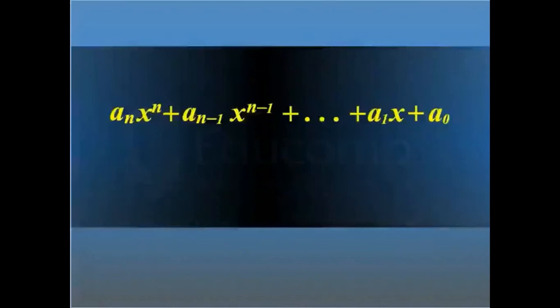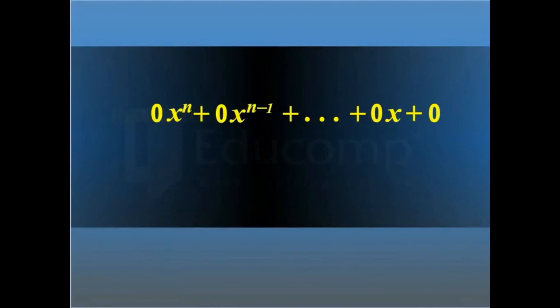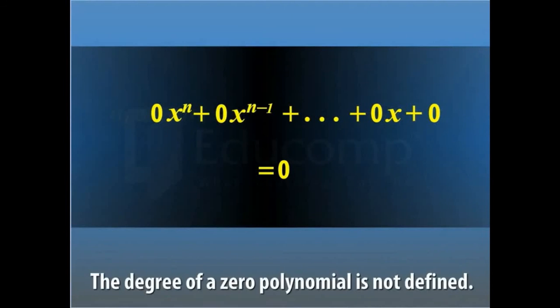If all the constants in this expression become 0, the polynomial becomes a zero polynomial. The degree of a zero polynomial is not defined.